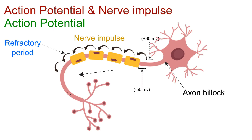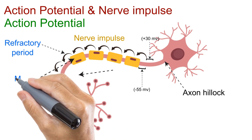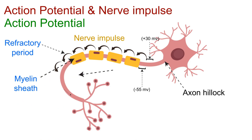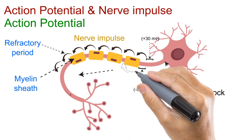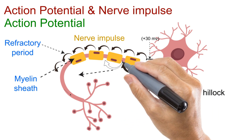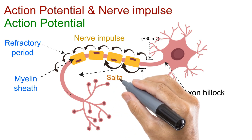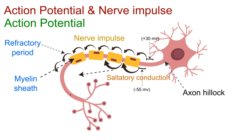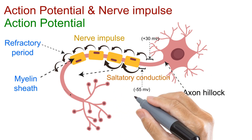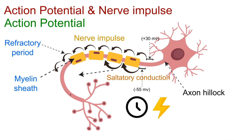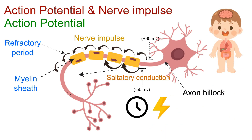Not all neurons conduct impulses at the same speed. Neurons that are wrapped with the myelin sheath transmit signals much faster. That's because the electrical impulse doesn't travel continuously along the entire axon. Instead, it jumps from one node of Ranvier to the next, a process called saltatory conduction. This jumping of impulses saves both time and energy, allowing messages from the brain to reach even the farthest parts of the body within fractions of a second.